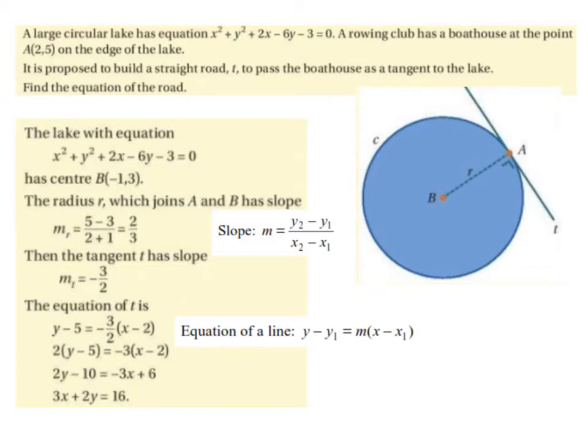So for this equation, we need a single point on that line. So we're going to go with the point A, which is the point of contact, which is (2,5). We label it x1, y1. And we need the slope, which we just worked out to be minus 3/2. Subbing into the formula, we get y minus 5 equals minus 3/2 times (x minus 2).